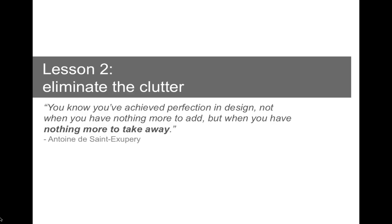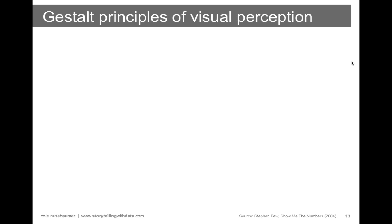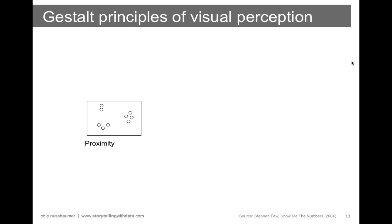Simple actually gets our message across in a much more powerful way than 3D and all the other things Tufte calls chart junk. That is the end of our first lesson. Next I want to talk about eliminating clutter. Clutter gets in the way of our visuals and detracts from our data. We'll start by talking about the Gestalt principles of visual perception. The Gestalt school of psychology set out in 1912 to understand how individuals perceive order in what they see.